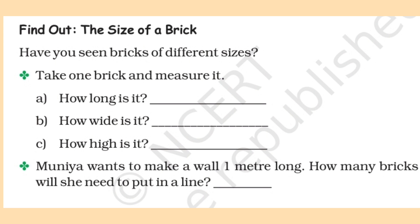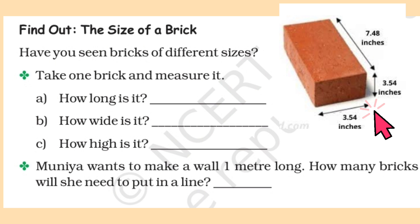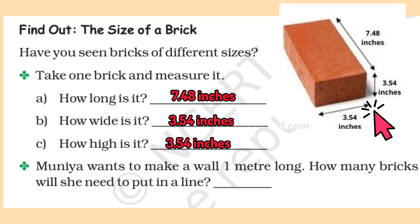Find out the size of a brick. Have you seen bricks of different sizes? Take one brick and measure it — how long, how wide, and how high is it? This brick is 7.48 inches long, 3.45 inches wide, and 3.54 inches high. Muniya wants to make a wall one meter long. One meter is approximately 38 to 40 inches, so dividing 40 by 7, she would need about 5 or 6 bricks in a line.